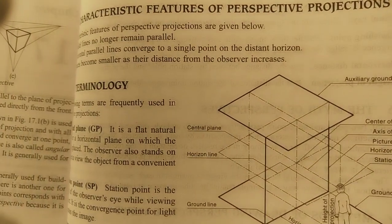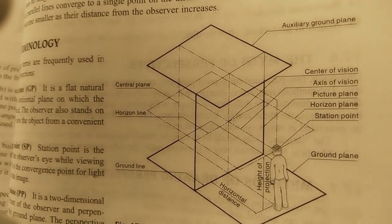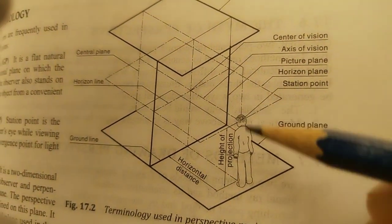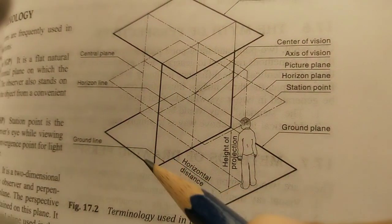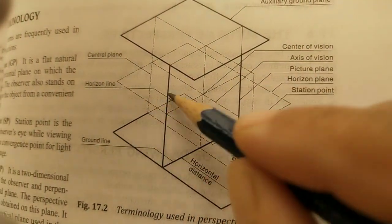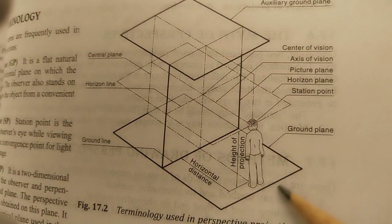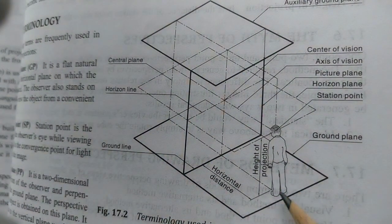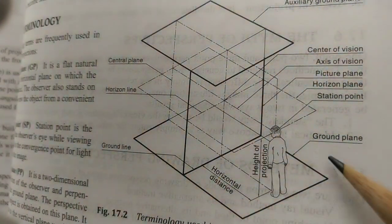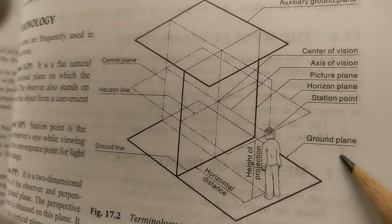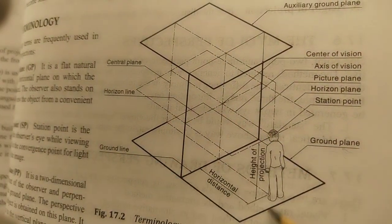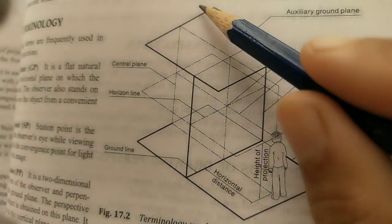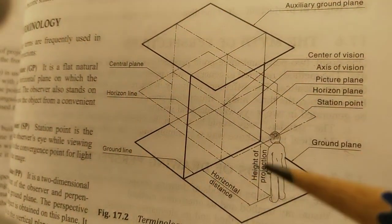Let us look at the important terms. The observer is standing on a horizontal plane. This plane is called the ground plane — remember this name, ground plane. Next, there is one more horizontal plane, which is an imaginary plane. These horizontal planes — the ground plane and the additional ones — are parallel to each other.